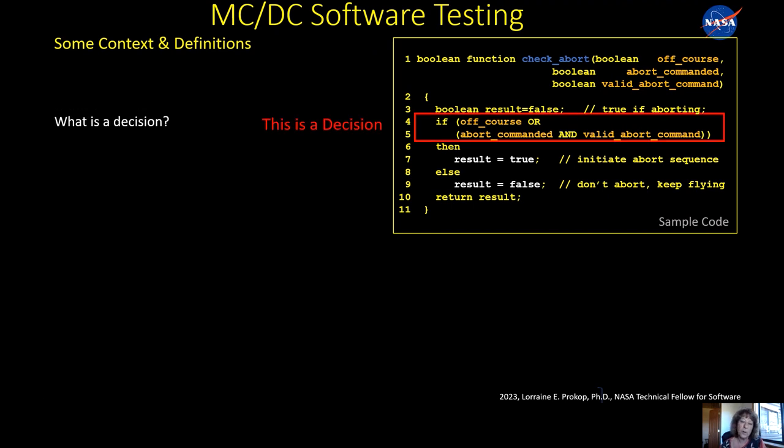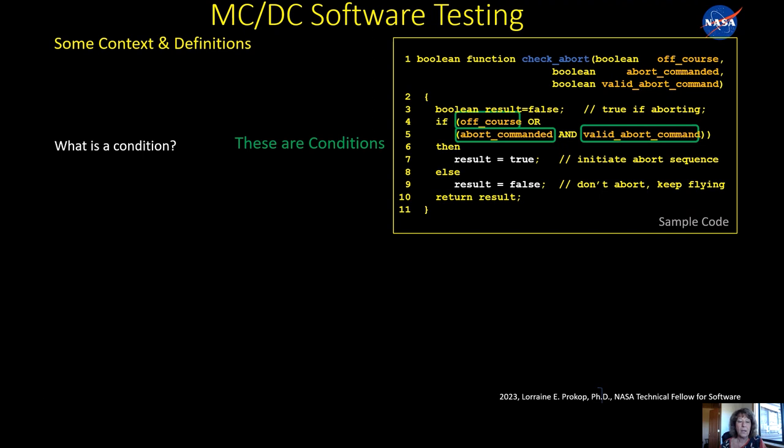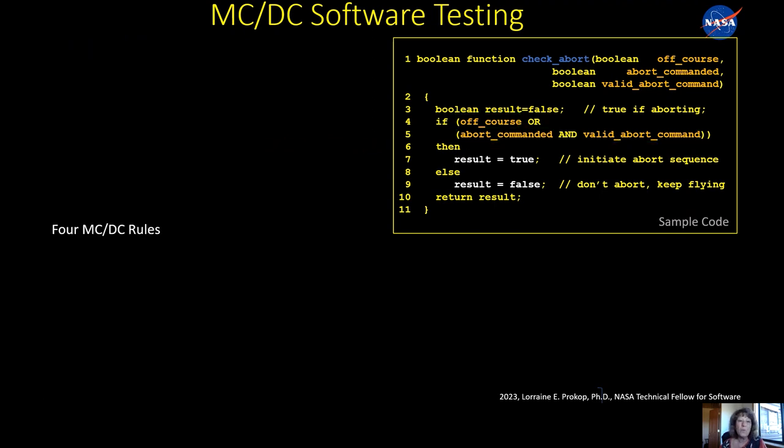So just a couple more definitions. This outlined in red is what's going to be called a decision. It's the if statement. And going to talk about these a lot, because that's sort of the focus of the MCDC. And the things outlined in green are conditions: off_course, abort_commanded, and valid_abort_command. Again, they take on true false values.